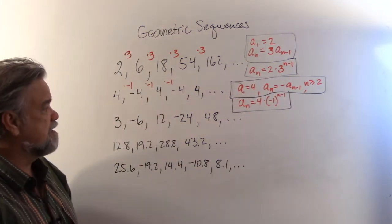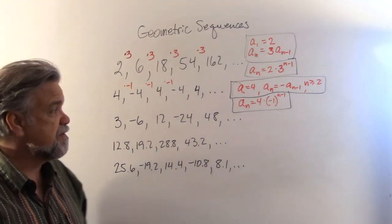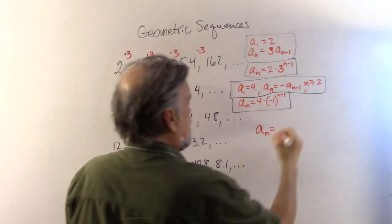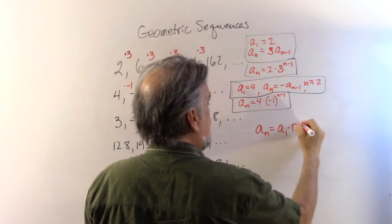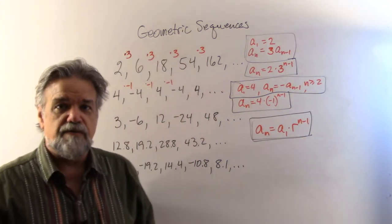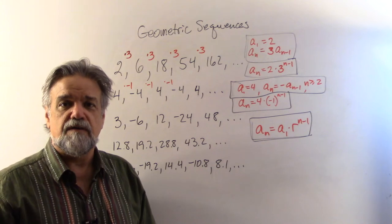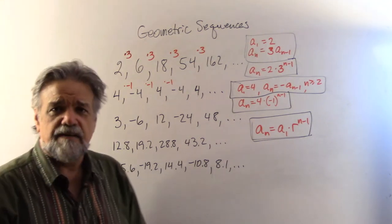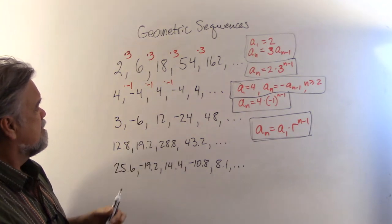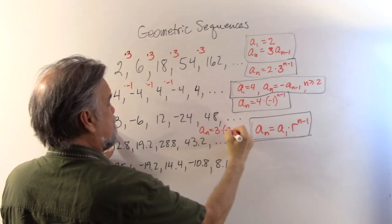As it turns out, the explicit way of defining the nth term of a geometric sequence is always: a sub n equals a sub 1 times r to the n minus 1. That's the key formula to know. Moving on, the next sequence starts at 3; multiplying by -2 gives -6, so that sequence is a sub n equals 3 times (-2) to the n minus 1.